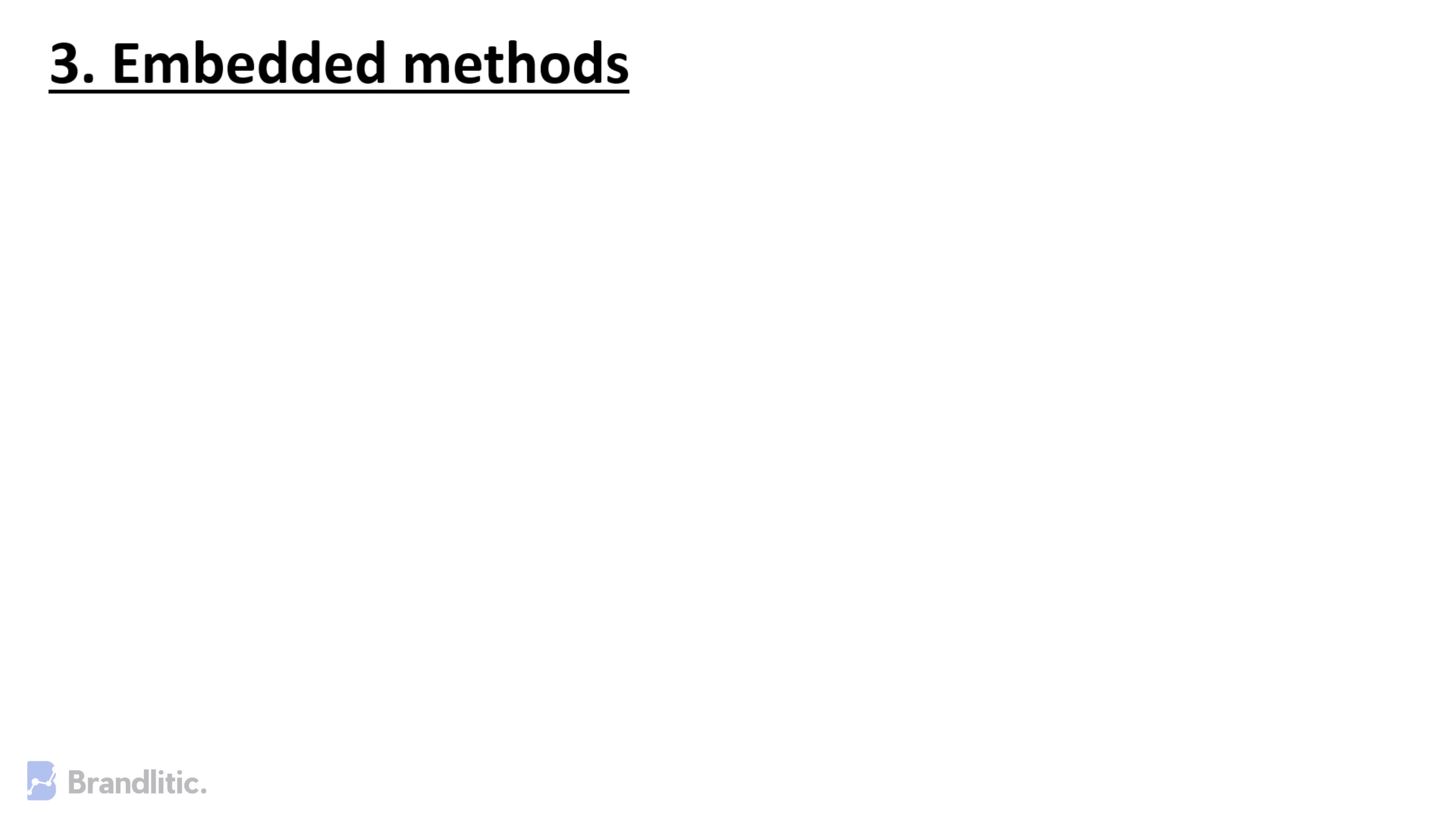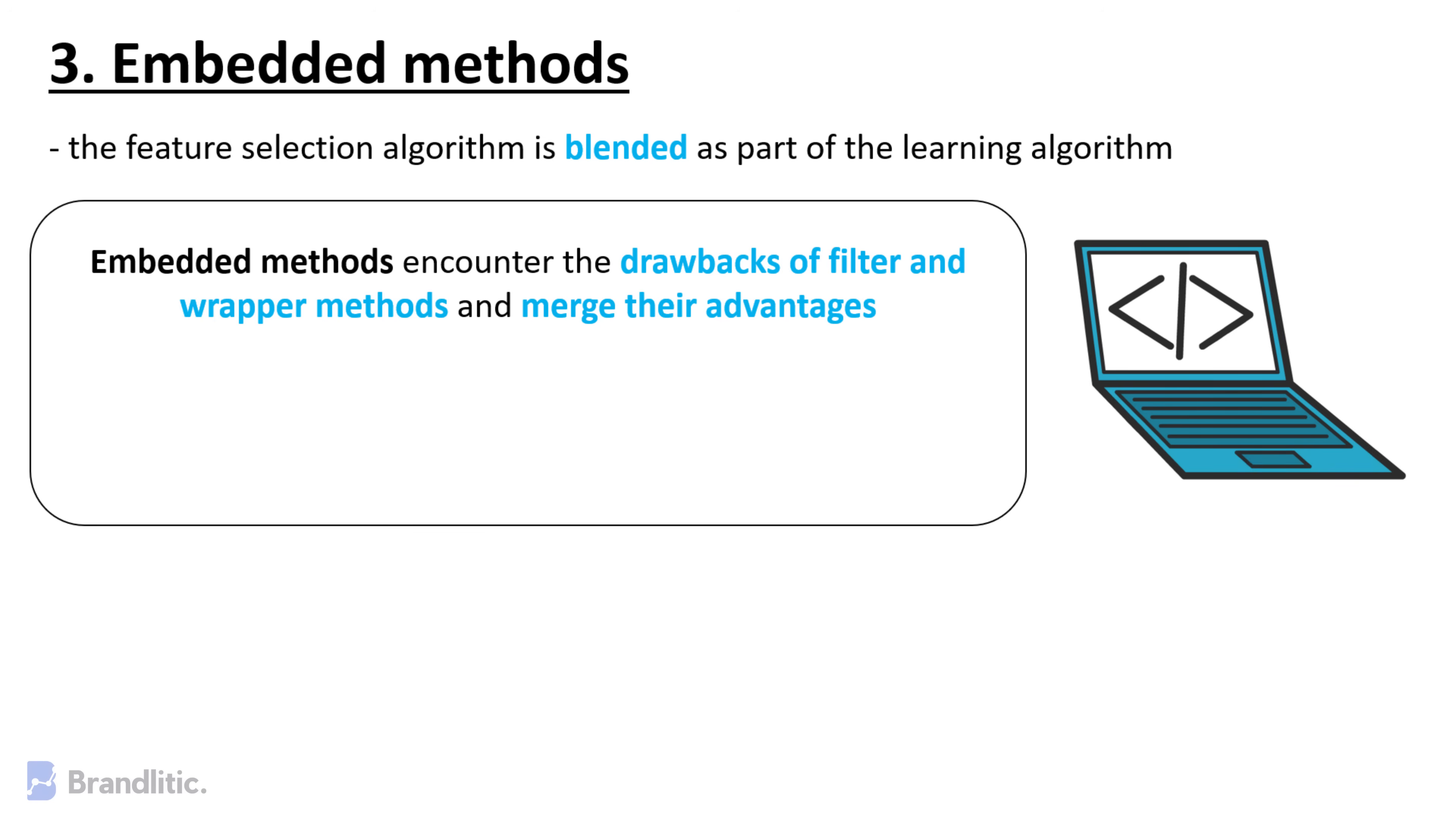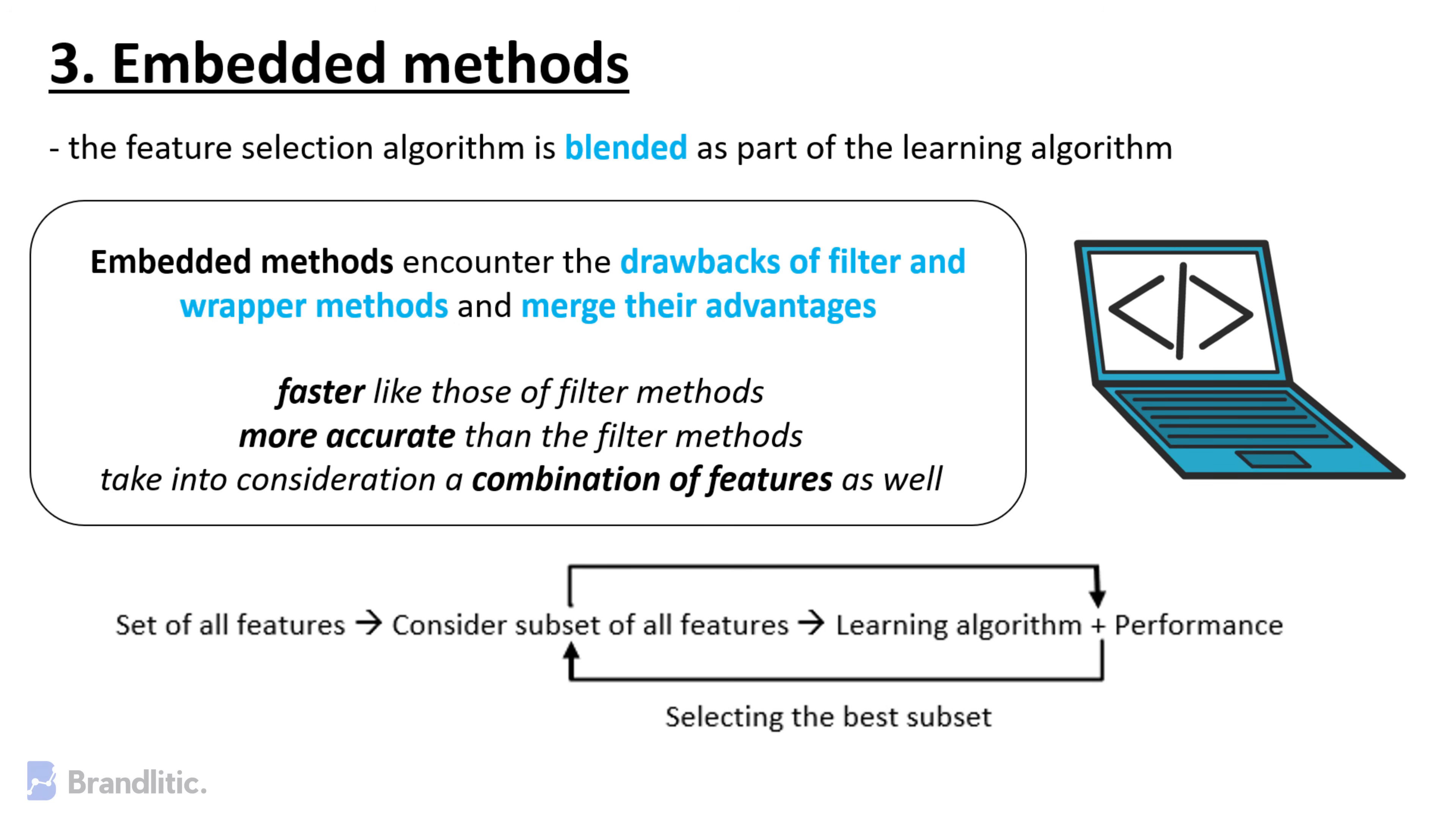Embedded Methods. In this, the feature selection algorithm is blended as a part of the learning algorithm, thus having its own built-in feature selection methods. If compared with earlier approaches, embedded methods encounter the drawbacks of filter and wrapper methods and merge their advantages. These methods are faster, like those of filter methods, and more accurate than the filter methods, and take into consideration a combination of features as well.